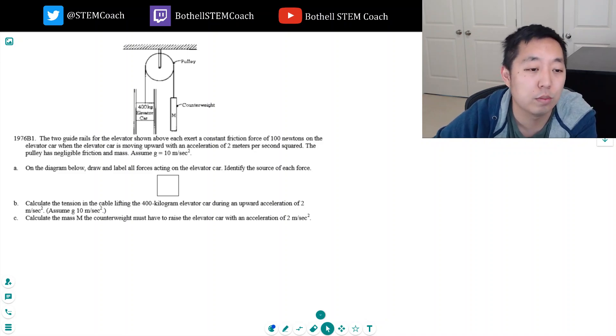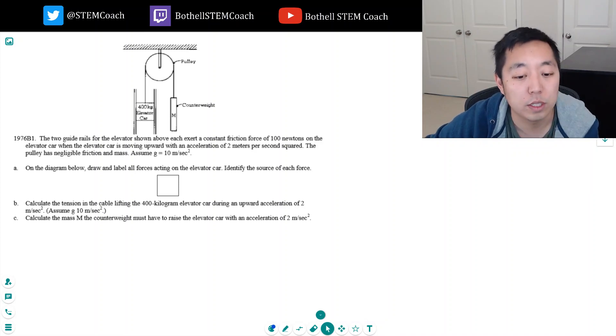Let's see what we got here. I got two guide rails for the elevator shown that exert a constant friction force of 100 newtons on the elevator car when the elevator car is moving upward with an acceleration of 2 meters per second squared. The pulley has negligible friction and mass. Assume g equals 10. On the diagram below, draw and label all forces acting on the elevator car.